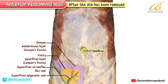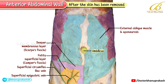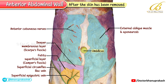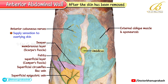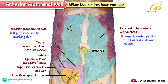Moving deeper, you can clearly see the external oblique muscle along with its aponeurosis on each side. The aponeurosis of the external oblique is pierced by several anterior cutaneous nerves, which supply sensation to the overlying skin. Do remember that the external oblique is not only the largest, but also the most superficial of all the lateral abdominal muscles.